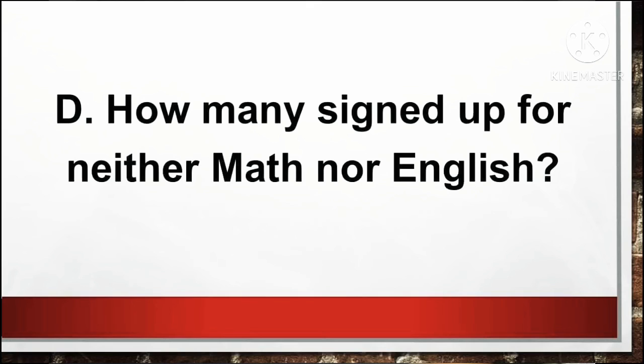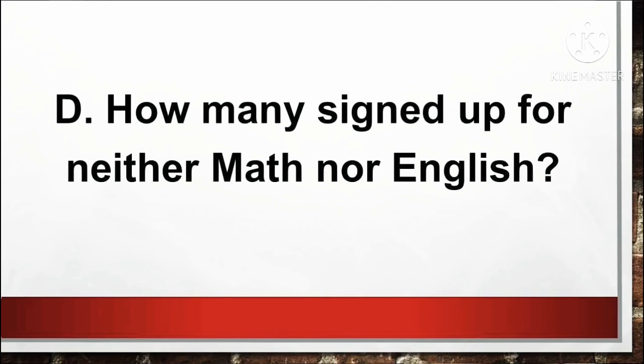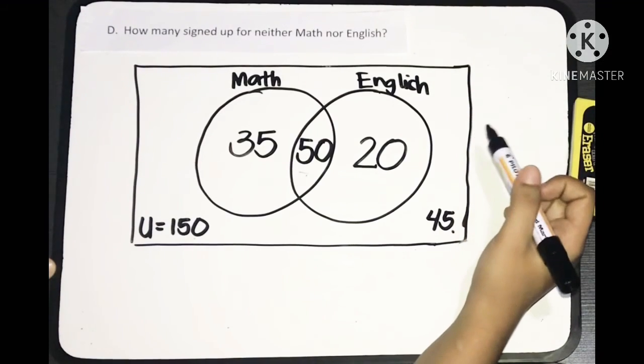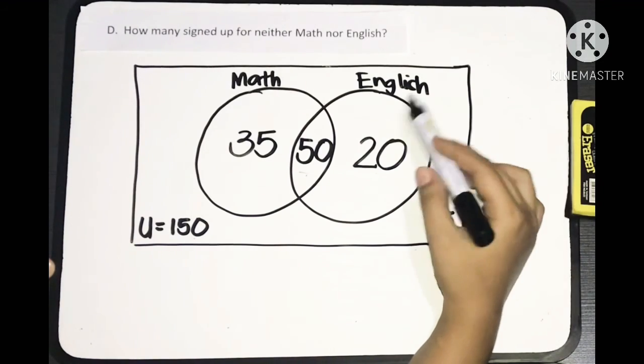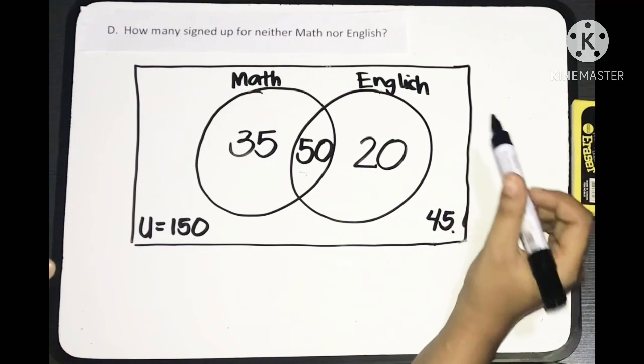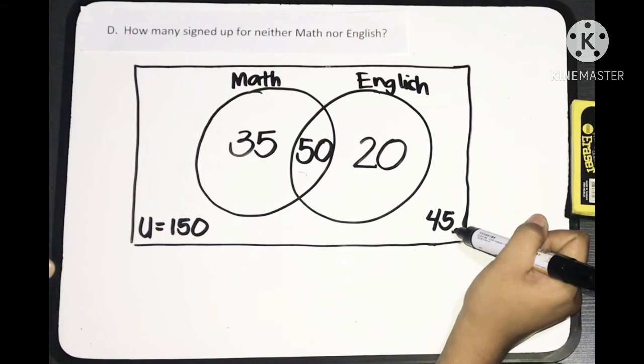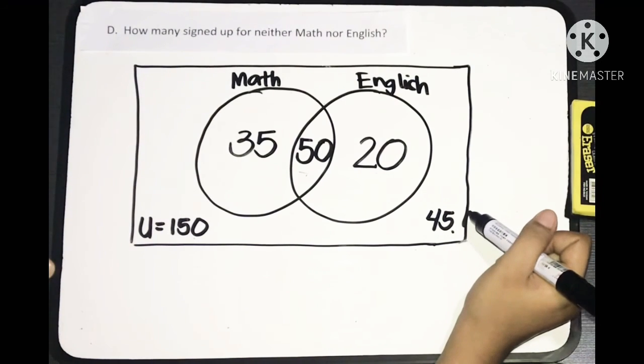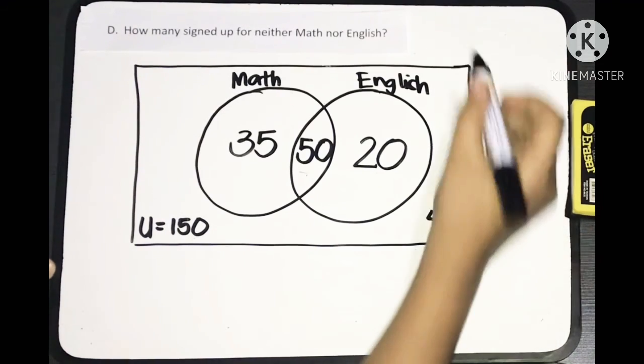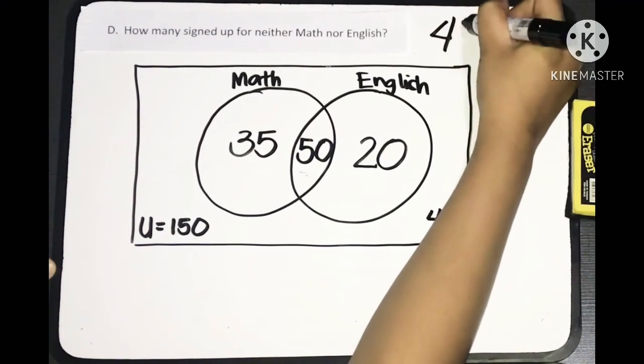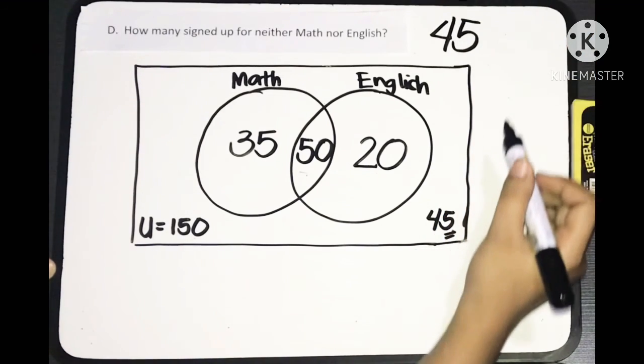For the last question: How many signed up for neither math nor English? This means those who did not register. Since it says neither, meaning to say, we don't care about the numbers inside the circles. But we're after the number outside the circles within the universal set. So, how many students did not sign up? There are 45 students who did not sign up for math or English.